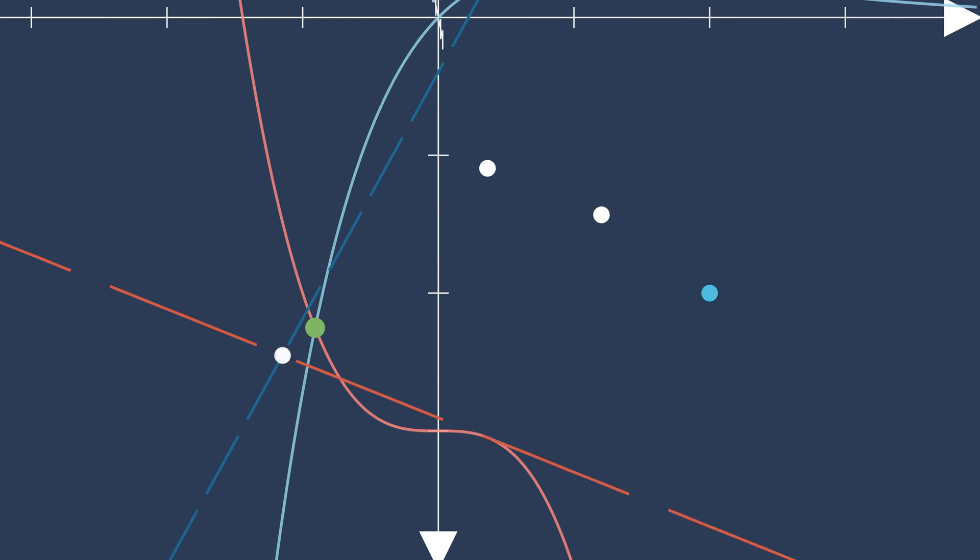I'll speed it up now, showing just the lines where the two tangent planes equal zero and their intersection. Like the 1D case, it converges very rapidly once it approaches the solution.